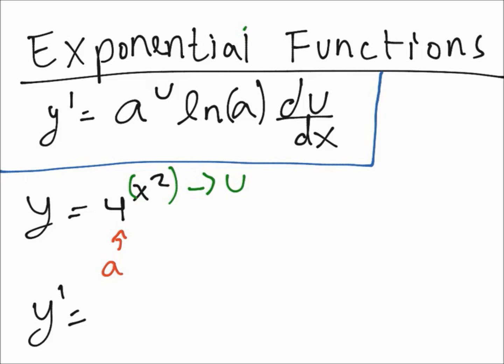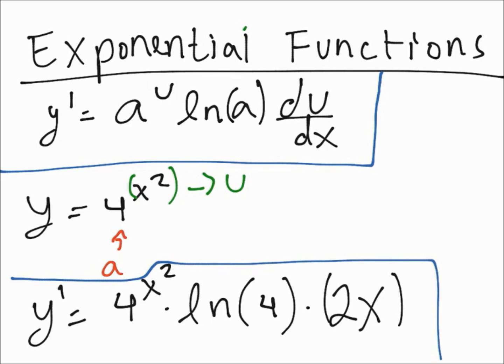Write the whole function again, 4^(x²) times the ln of the constant that's 4, times the derivative of x squared, that's 2x. And that's the result.